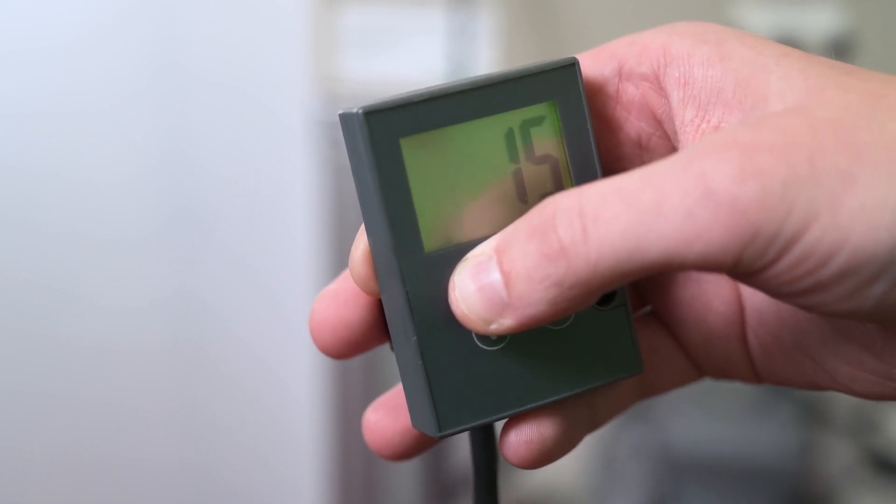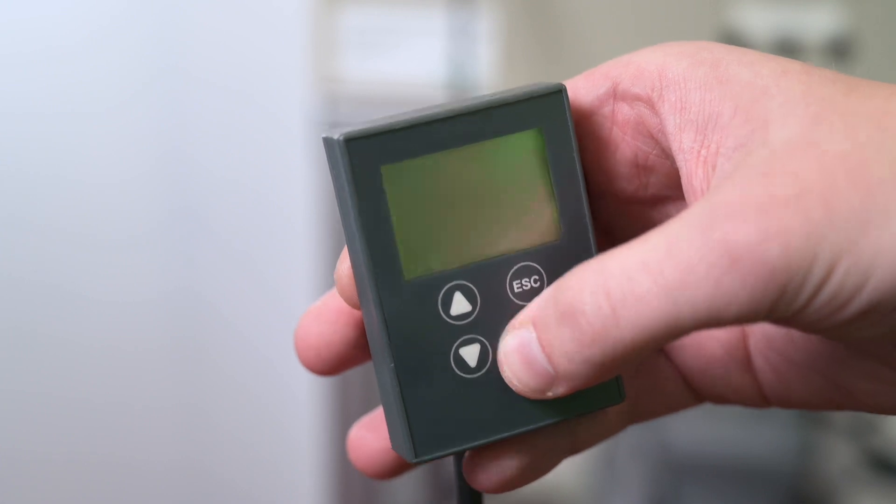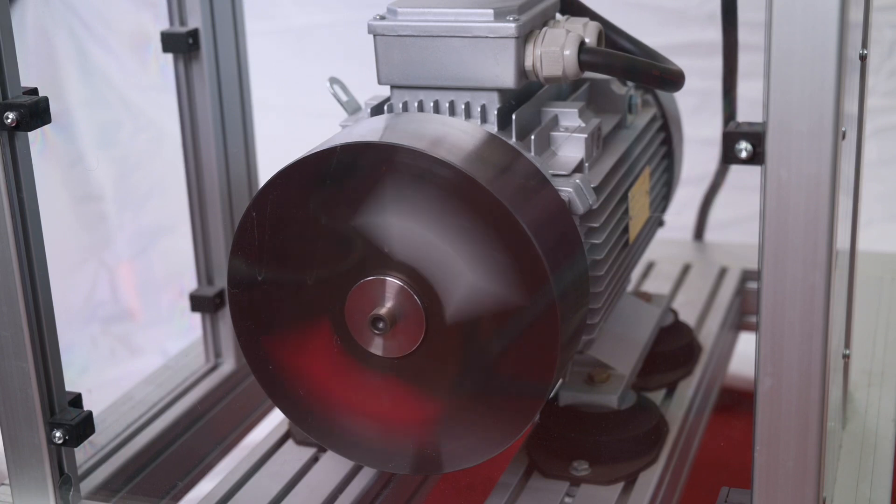It is useful when you need to break an initial inertia. Here, you can see the motor starting faster because TQ0 is set to 20.